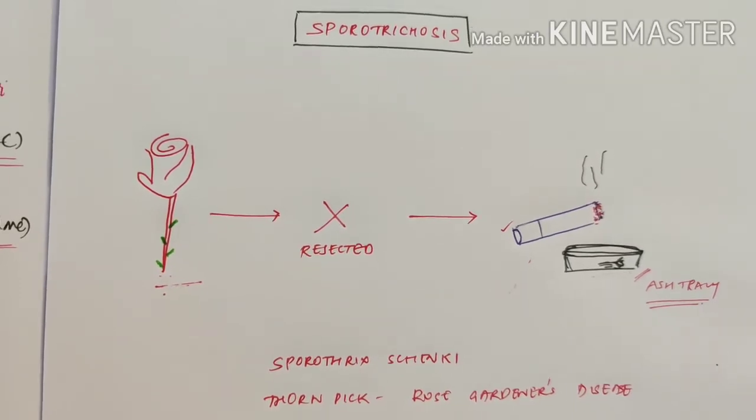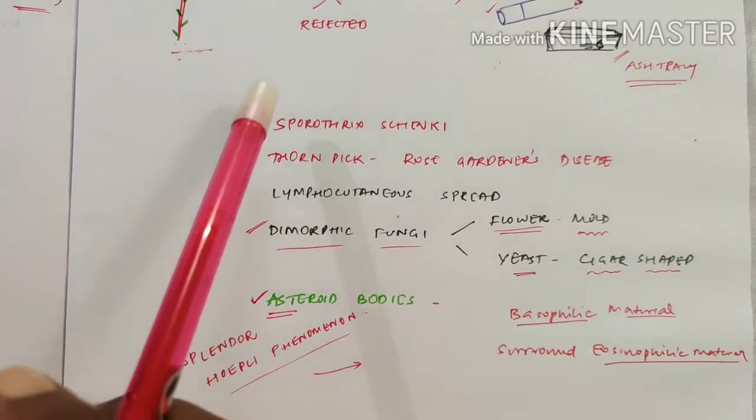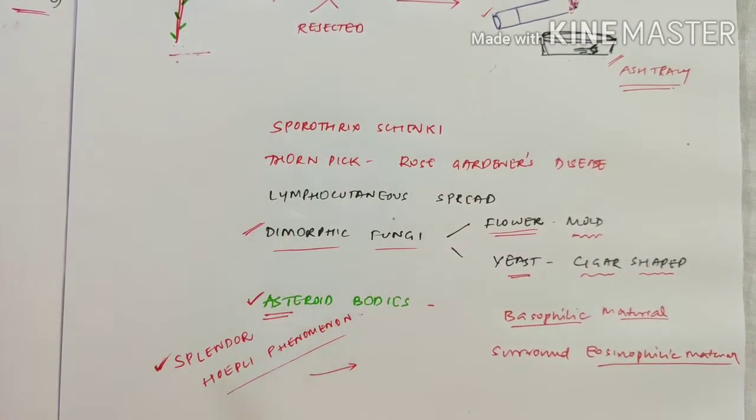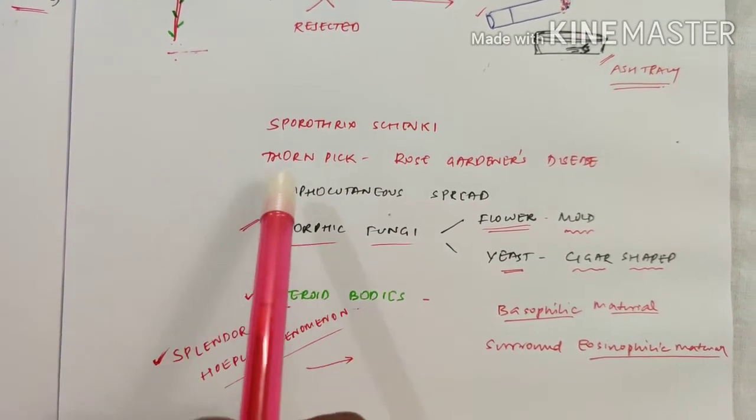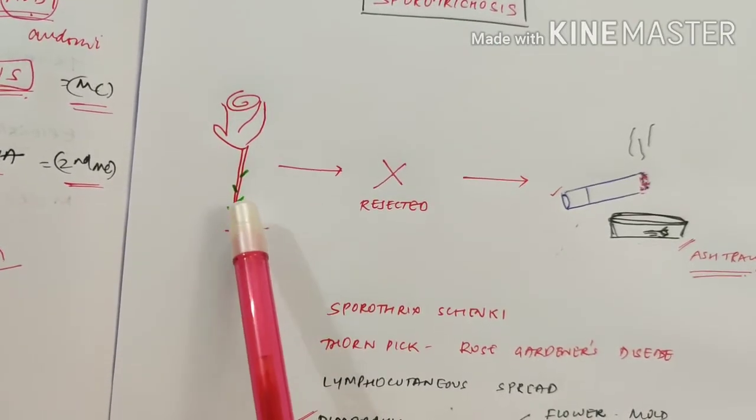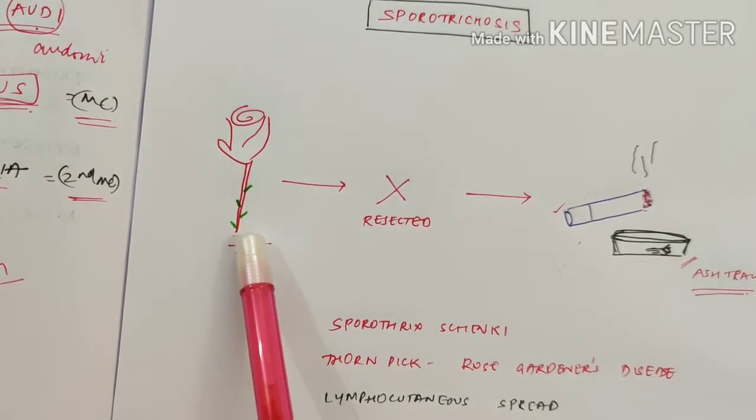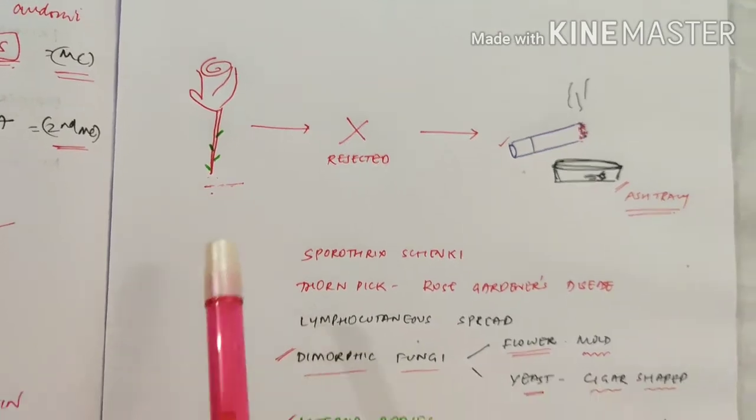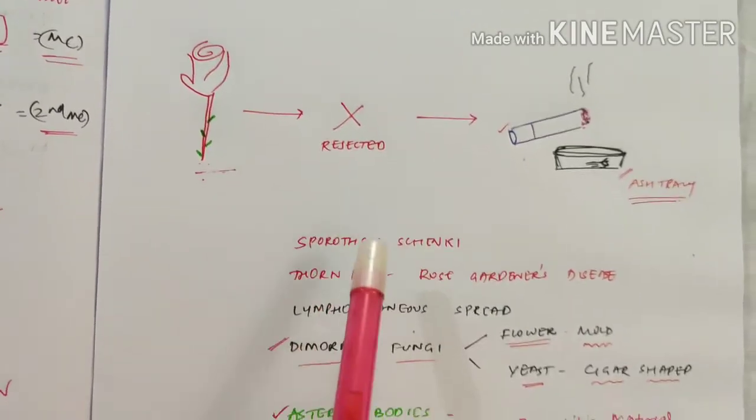Let's come to those words which are hidden in that story. Sporotrichosis is caused by Sporothrix schenckii and it occurs via thorn prick. Rose flower has thorns—because of a thorn prick, sporotrichosis occurs. That's the reason why it's called rose gardener's disease.